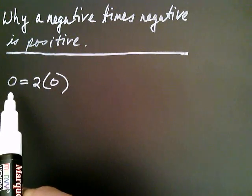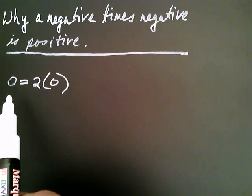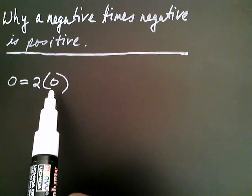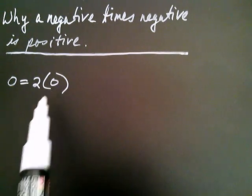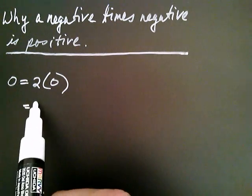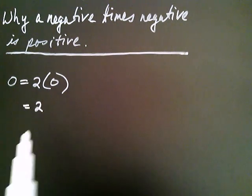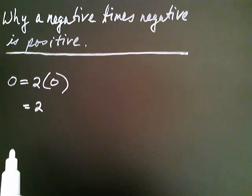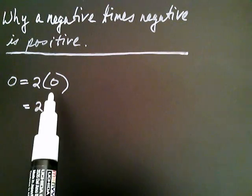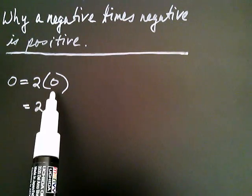What we're going to do is rewrite zero in a creative way — as one plus negative one. Wouldn't you agree that one plus negative one is equal to zero?